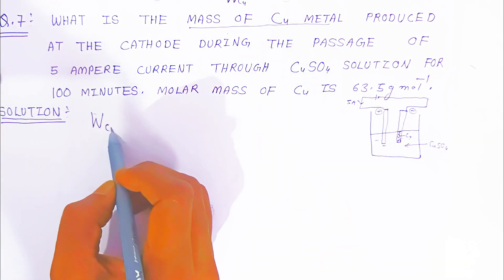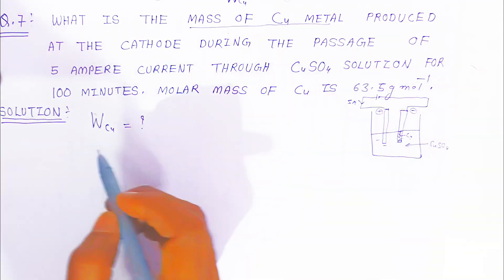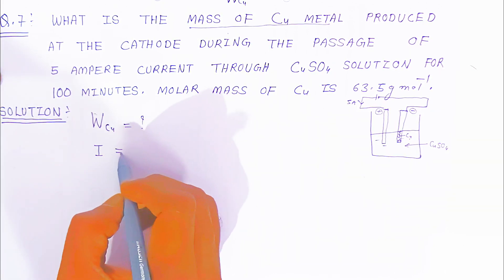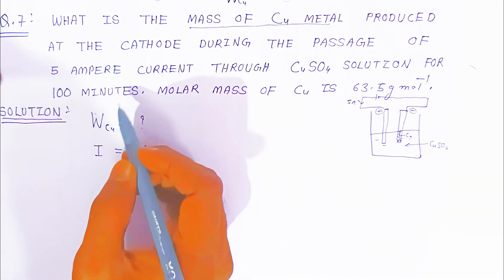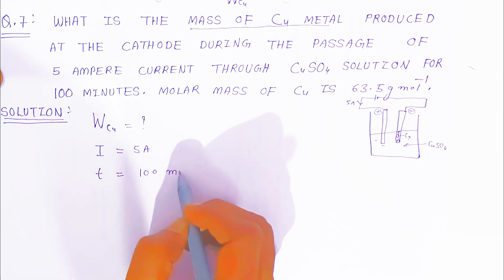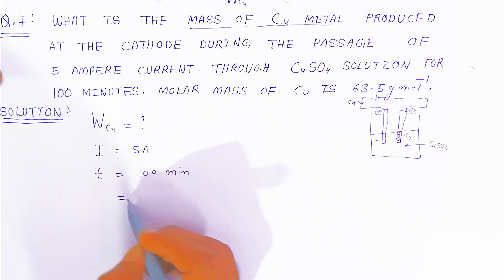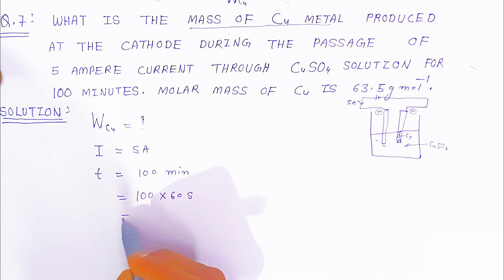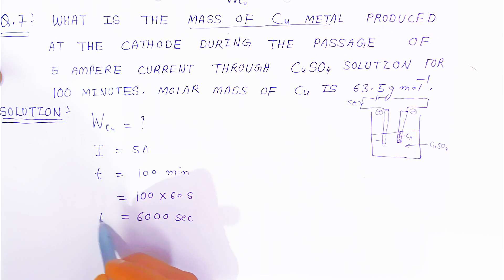First we will write what we have to find and what is given. We have to find the weight of copper. The current, represented as capital I, is 5 ampere. The time given is 100 minutes. We have to convert minutes into seconds, so we multiply 100 by 60, which gives 6000 seconds.